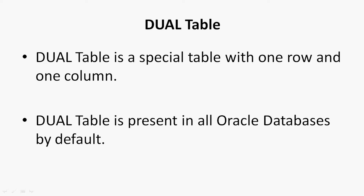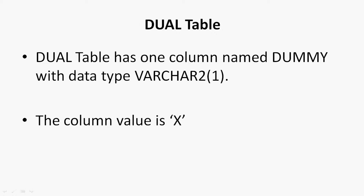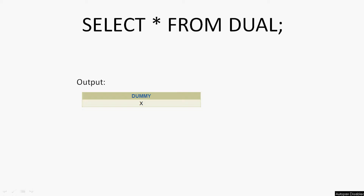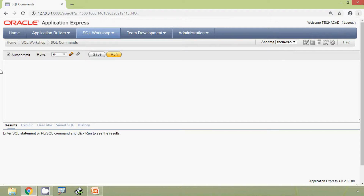By default, the dual table has one column named DUMMY with data type VARCHAR2 of size 1. The column value is X. We can see the output for DESCRIBE DUAL, the column name is DUMMY, data type VARCHAR2(1). We will also run SELECT * FROM DUAL in our Oracle Express application.